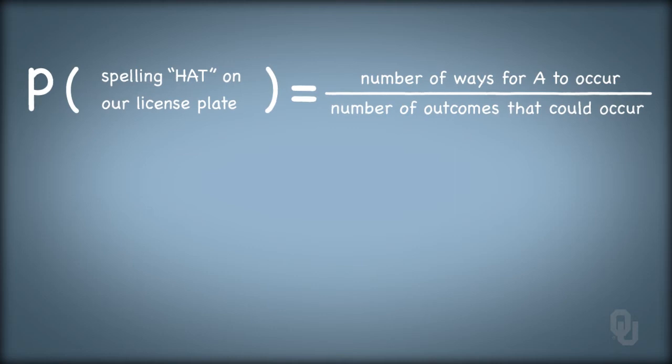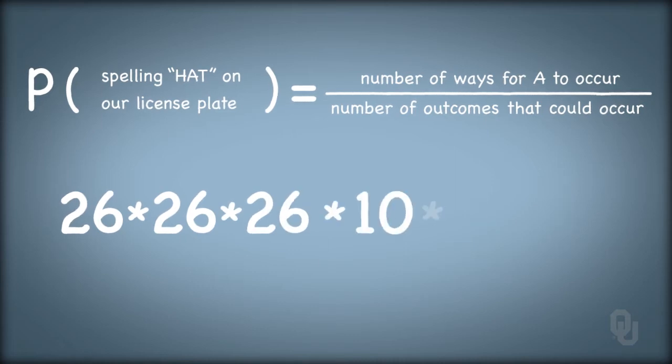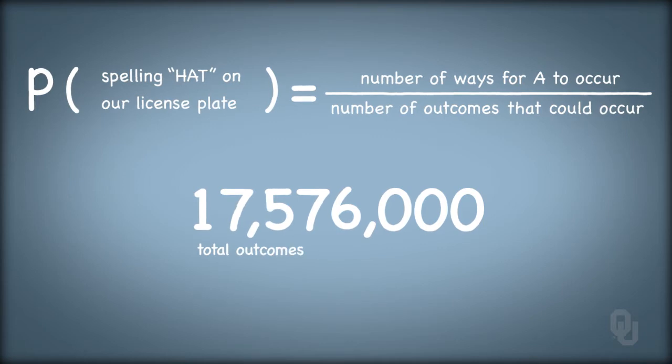Say we define event A as spelling hat on our license plate. How many total license plates are possible? With 26 letters in the alphabet and 10 digits, the number of ways to get letter, letter, letter and then number, number, number is 26 times 26 times 26 times 10 times 10 times 10, or 17,576,000.